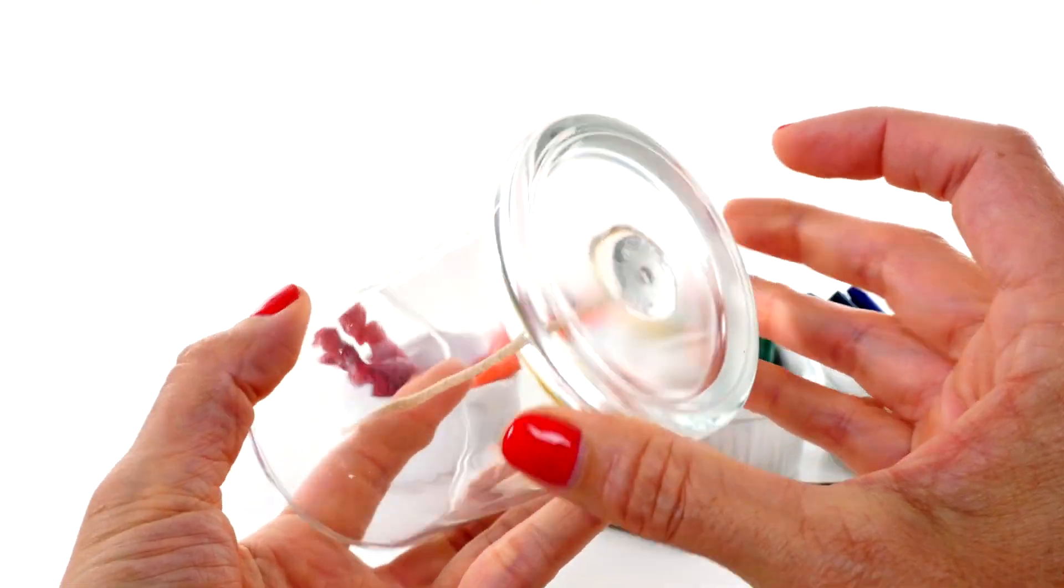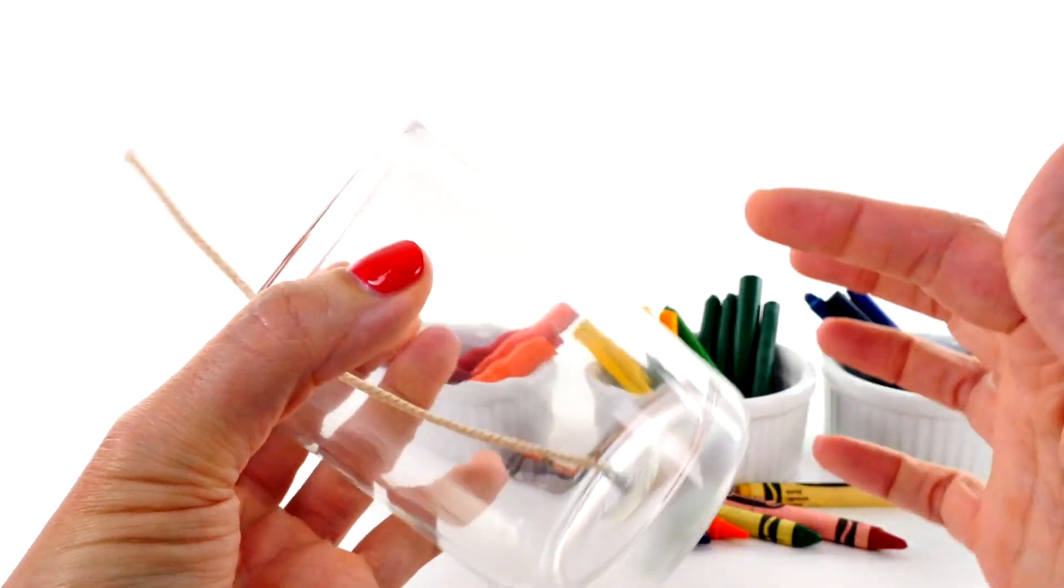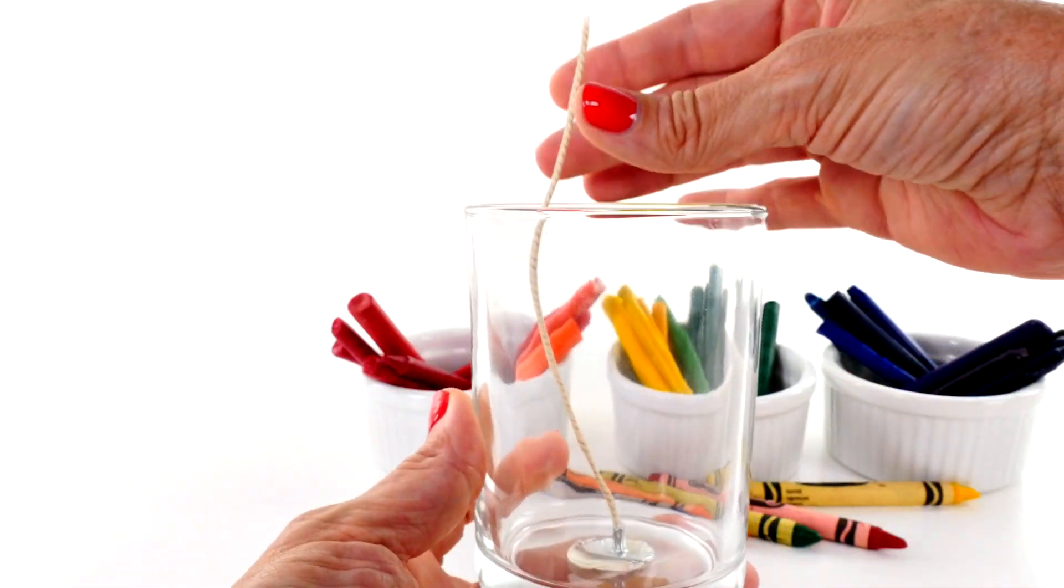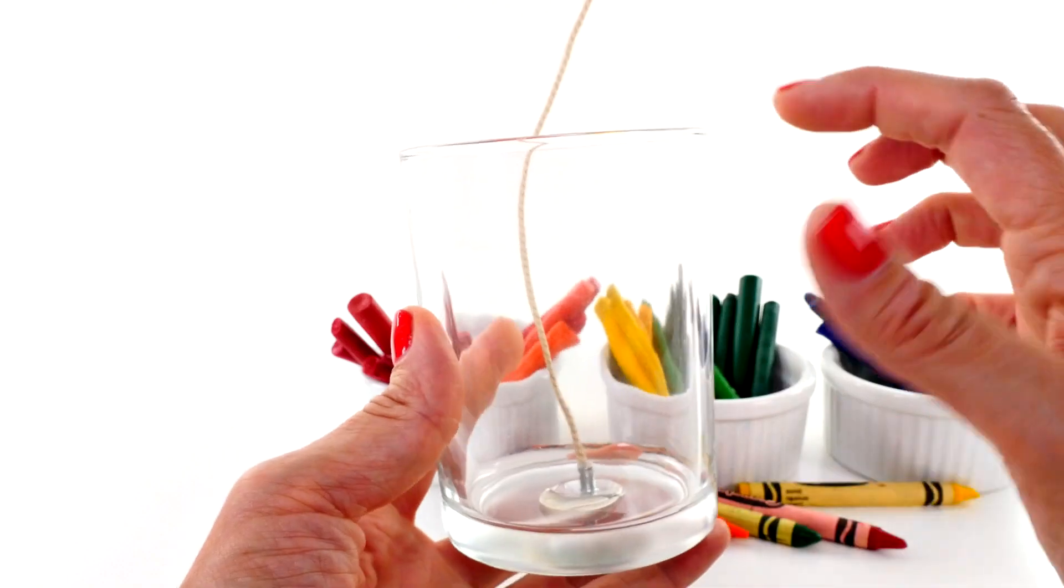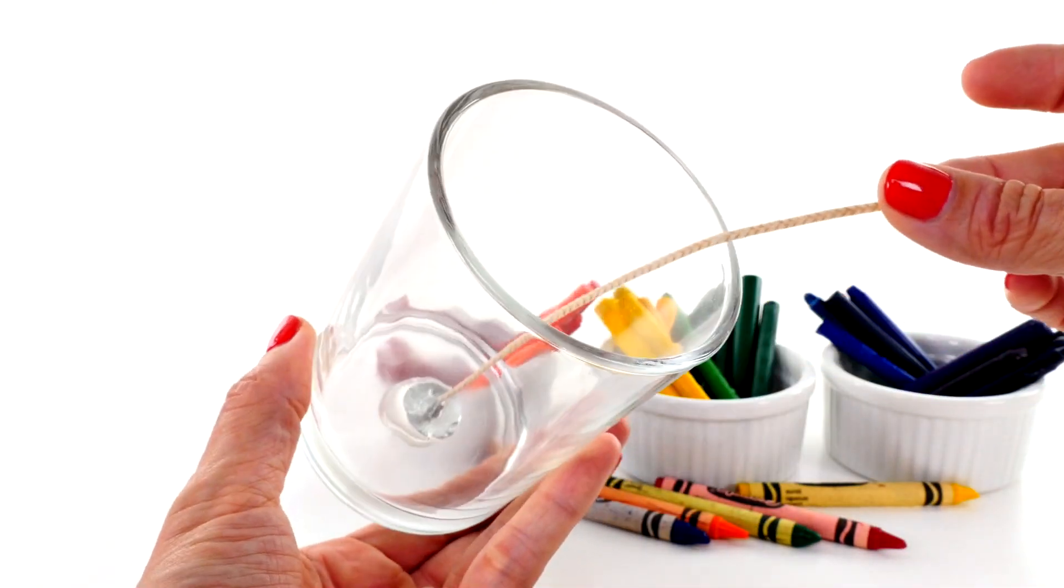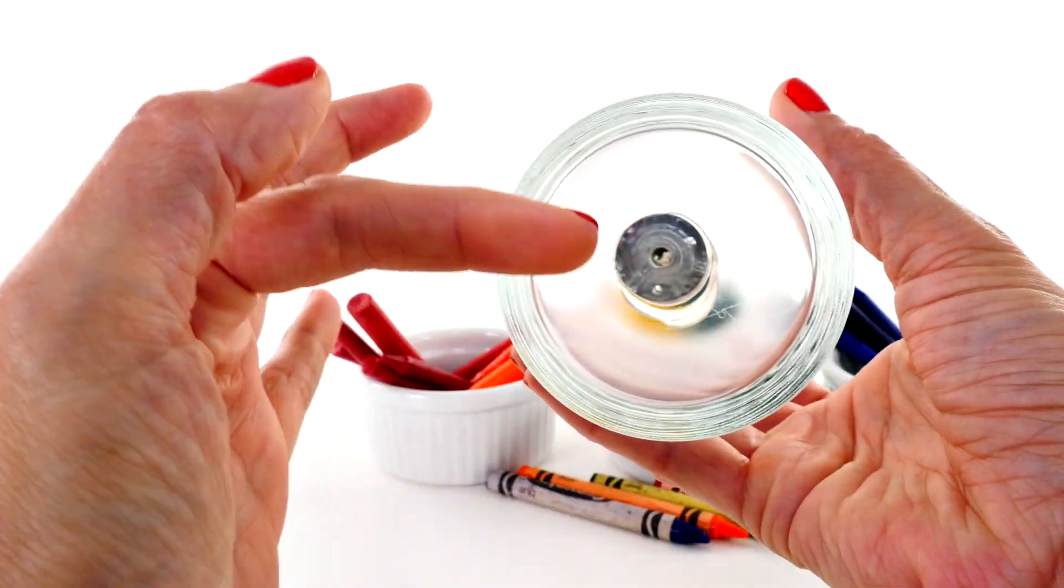I went to the craft store and I was going to buy a wick and a glass jar, but they actually had one that was already made. So if you want to do this, you need some kind of a glass jar with a wick. You can buy the wick at a craft store and glue it to the bottom like this.